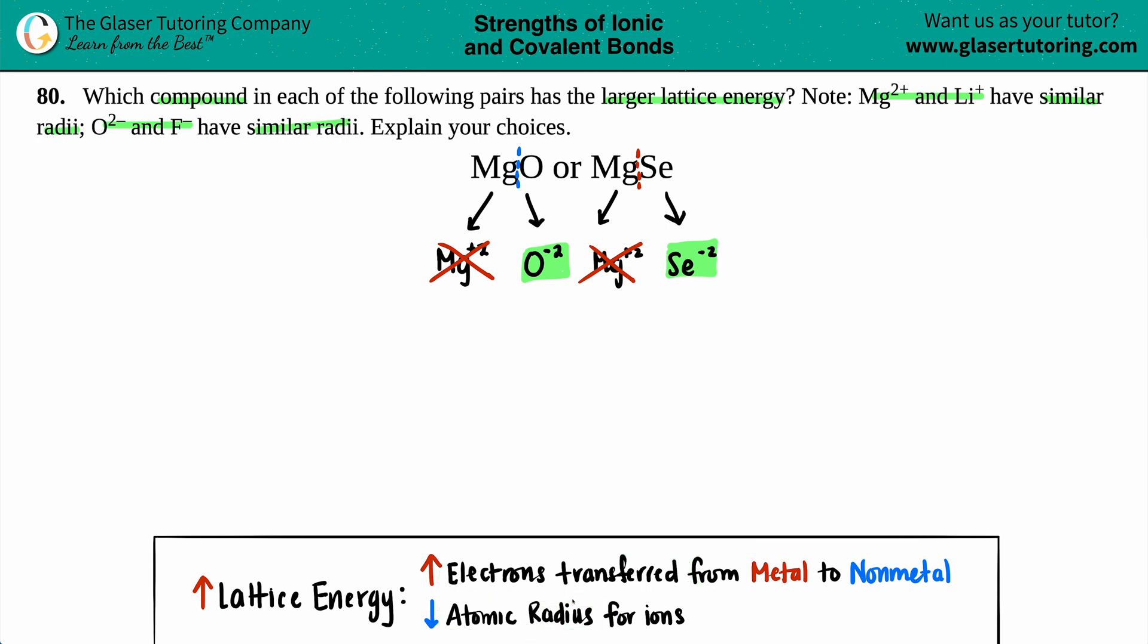In this case, they both involve the transfer of two electrons because they both have a -2 charge. Two electrons for oxygen, two electrons for selenium—that does not have any difference.